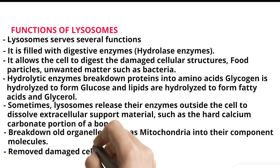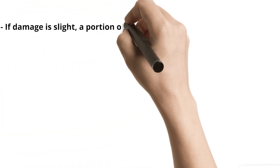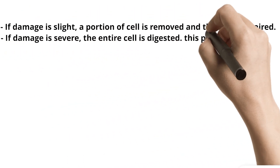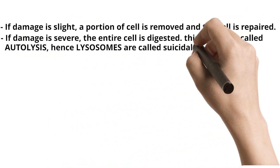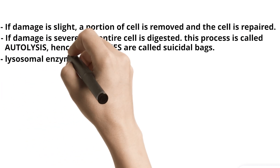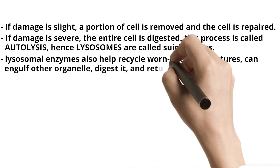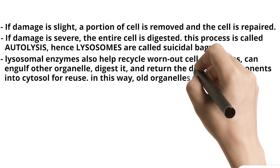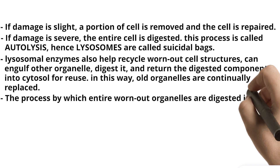Lysosomes remove damaged cells or damaged portions of cells from tissue. If damage is slight, a portion of the cell is removed and the cell is repaired. If damage is severe, the entire cell is digested — this process is called autolysis. Hence, lysosomes are called suicidal bags. Lysosomal enzymes also help recycle worn-out cell structures; they can engulf other organelles, digest them, and return the digested components into the cytosol for reuse. In this way, old organelles are continually replaced. The process by which entire worn-out organelles are digested is called autophagy.